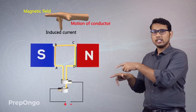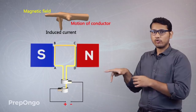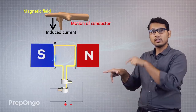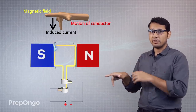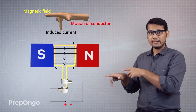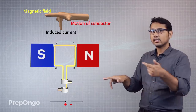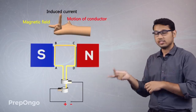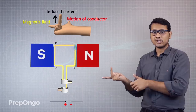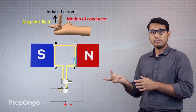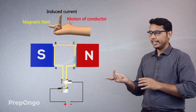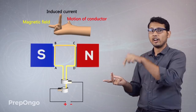We are rotating the coil such that the AB arm — the right arm — moves in the outward direction. Applying Fleming's Right Hand Rule, current is induced in the downward direction in the AB arm. For the CD arm, the movement is inward, so we reverse the thumb. The second finger then gives us the direction of induced current in the CD arm — upward. So current flows upward in the CD arm and downward in the AB arm.